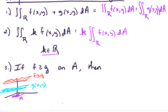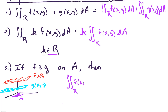So if f sits higher — if f is greater than or equal to g — then that implies that the double integral over R of f(x,y) dA is greater than or equal to the double integral over R of g(x,y) dA.